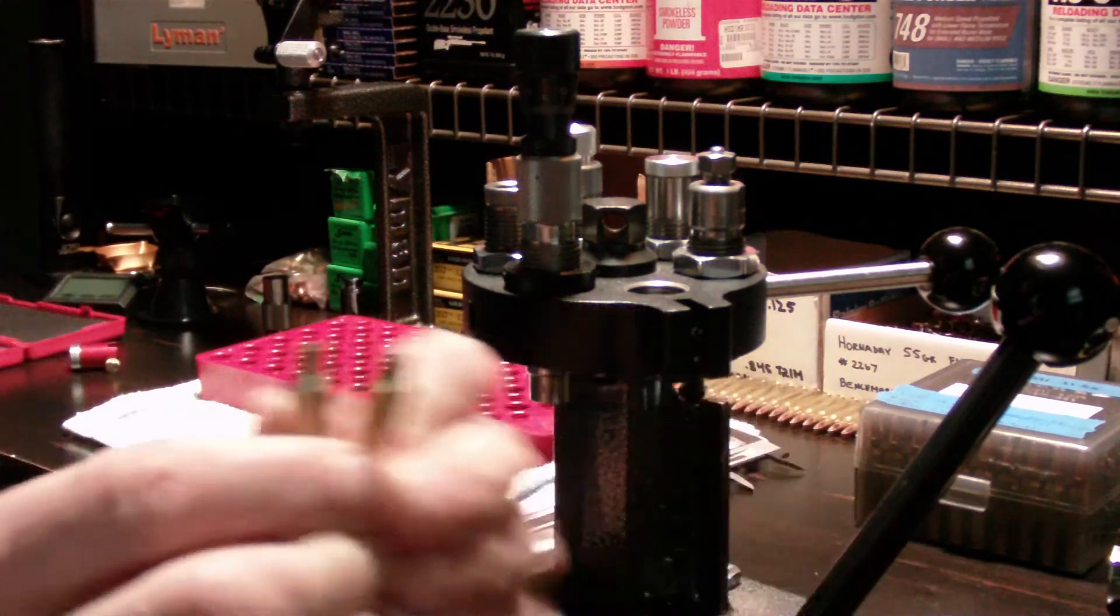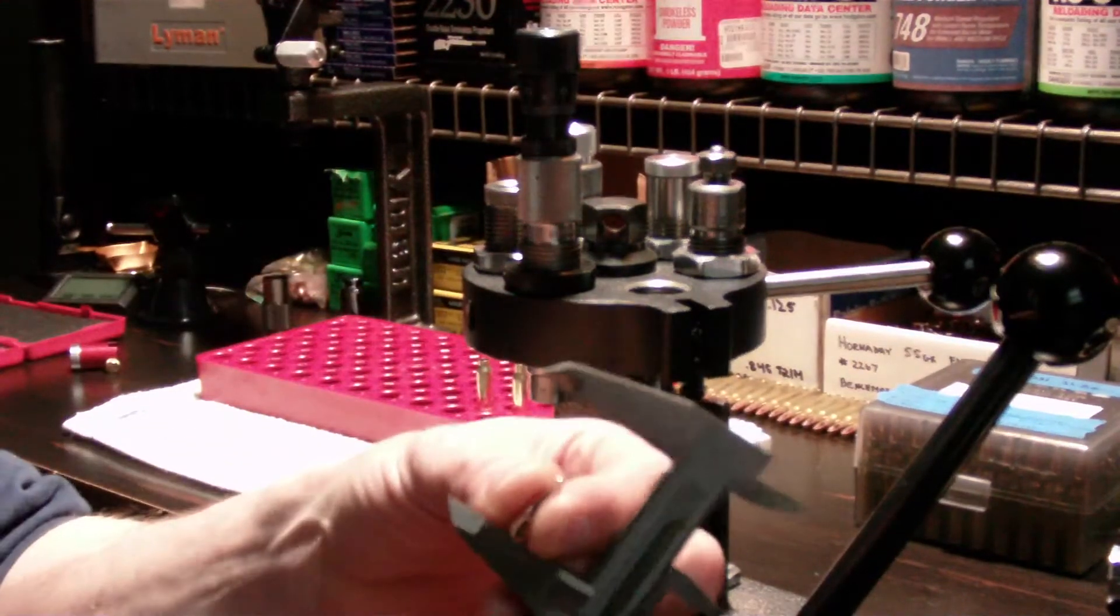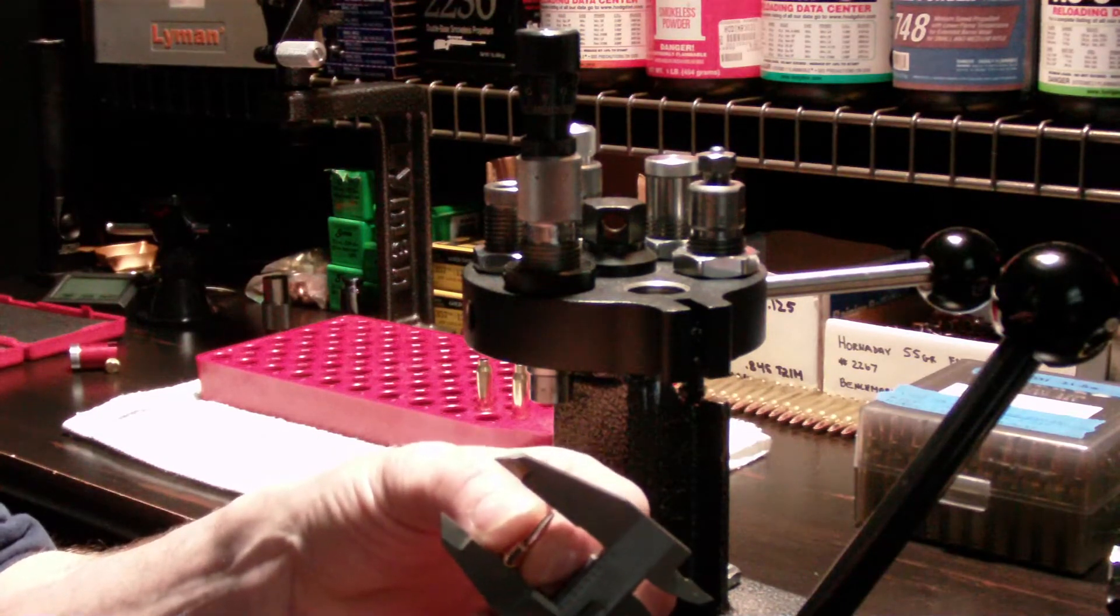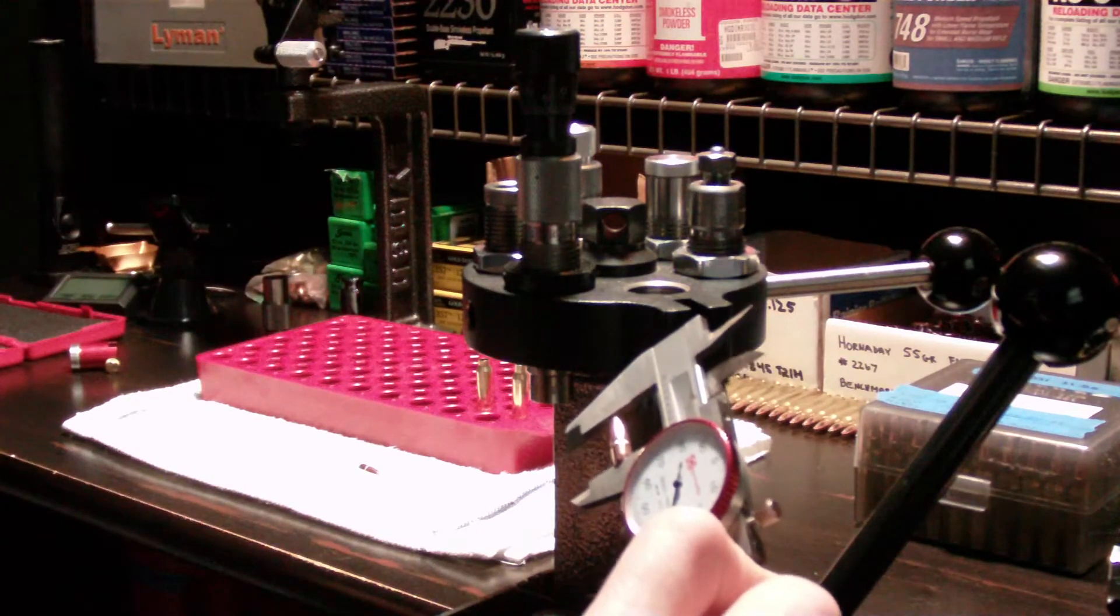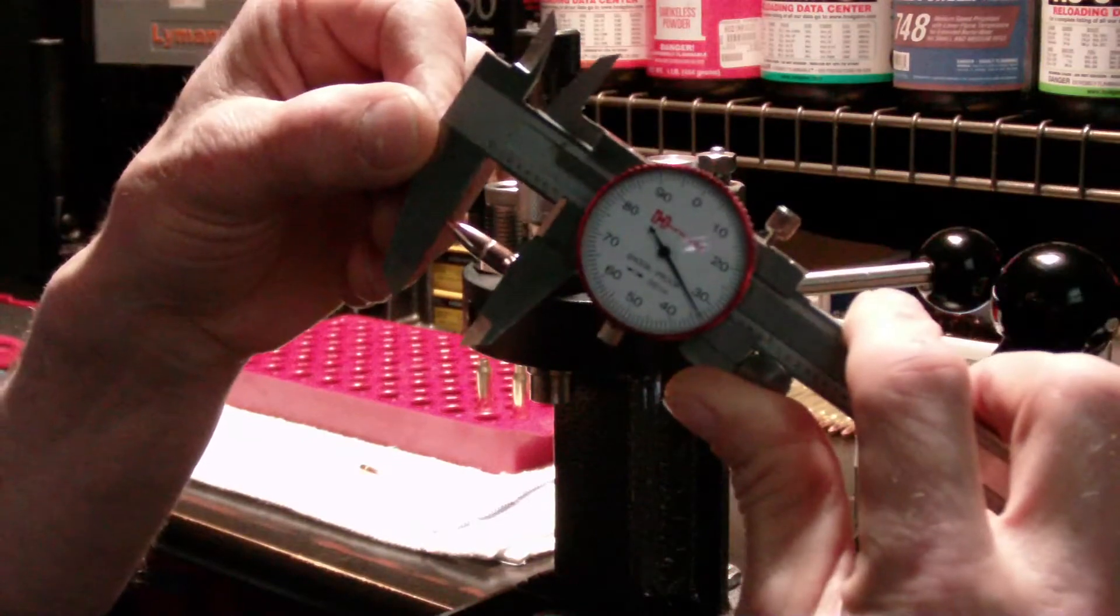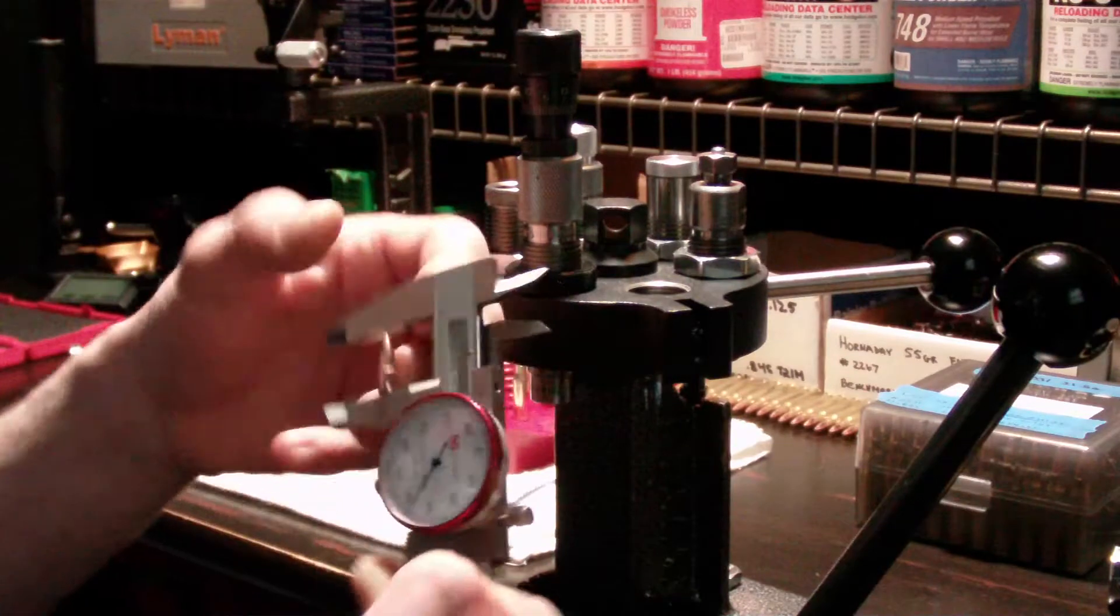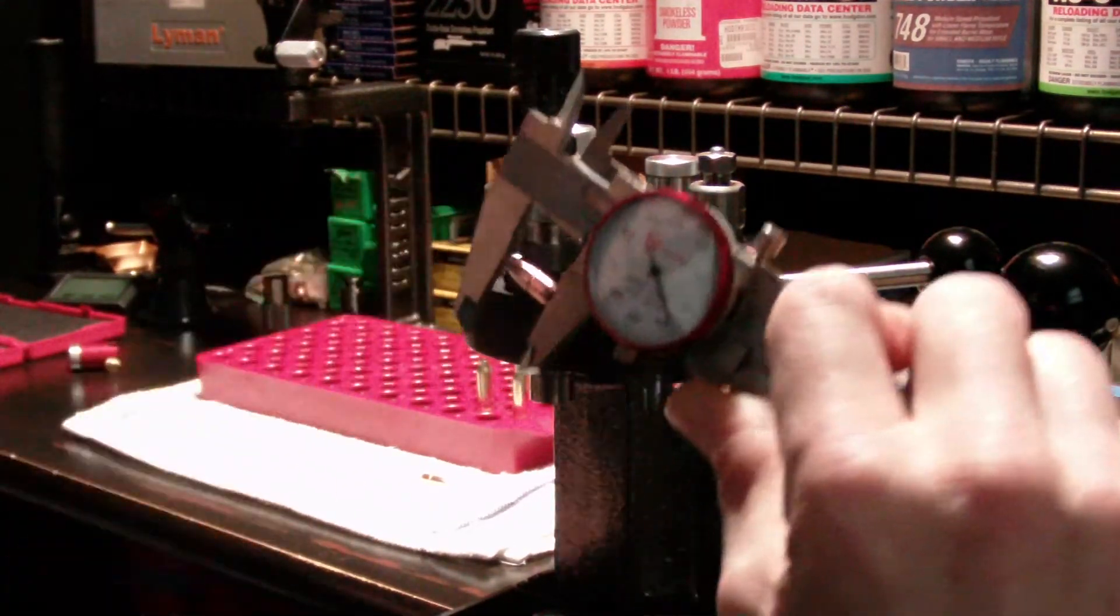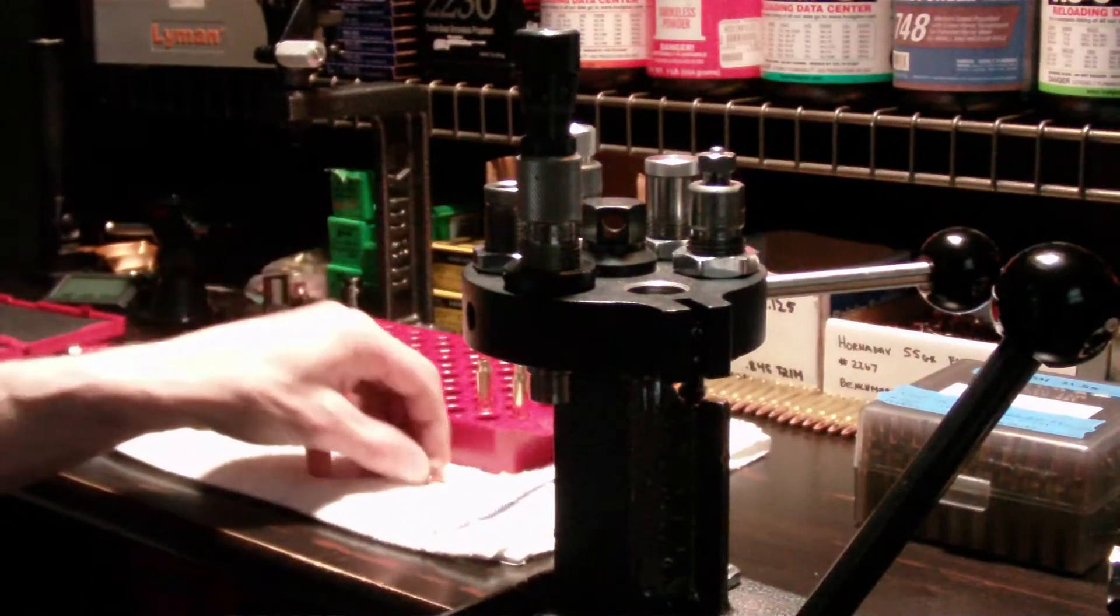I just want to also go on to - if you were to measure each bullet before you seated them, there is a difference there as well. This one measures in at .733 inches, and then this one here is almost .730. So there's three thousandths difference in the length of these bullets.